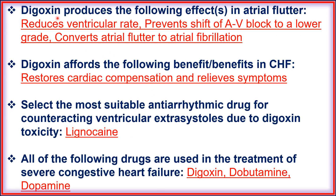Digoxin produces the following effects in atrial flutter: it reduces ventricular rate, prevents shift of AV block to a lower grade, and converts atrial flutter to atrial fibrillation.